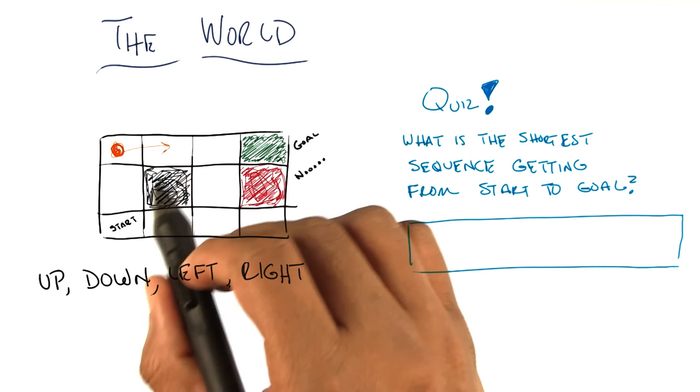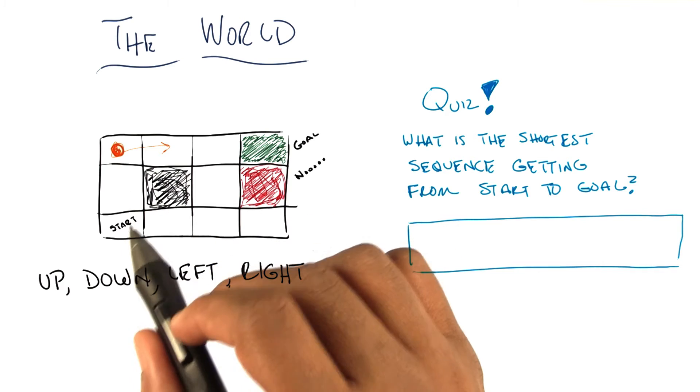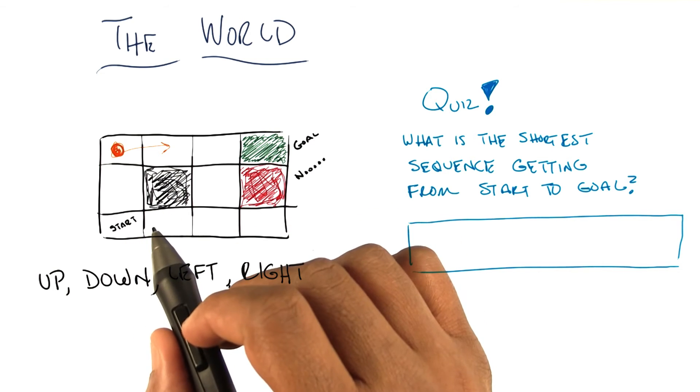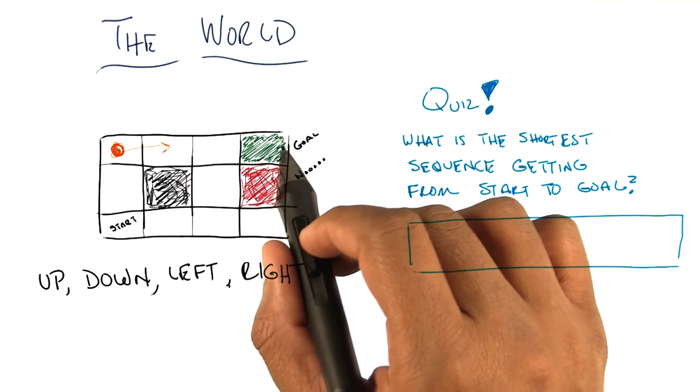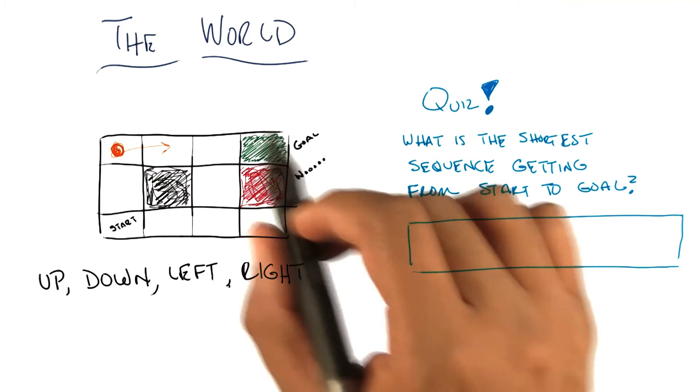Three last things. One, this little black space here is a place you can't enter into. So it acts just like a wall. This green space is the goal, and once you're there, it's over. The world is over and you get to start over again.